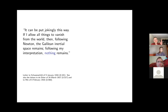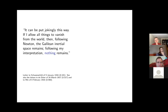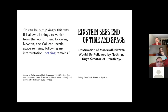This thought can be traced back to a letter to Schwarzschild of 1916: it can be put jokingly this way — if I allow all things to vanish from the world, then following Newton, the Galilean inertial space remains; following my interpretation, nothing remains. Einstein really liked this formulation and stuck with it after the period we're interested in, even when he talked to journalists.